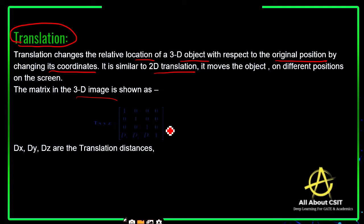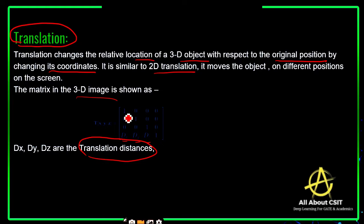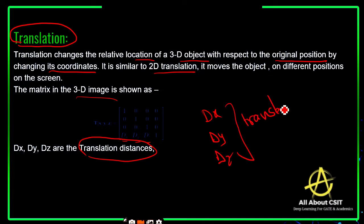The matrix used in 3D for translation contains dx, dy, and dz. These dx, dy, and dz are the translation distances — how much the object is going to be translated based on the original position. They are the translation distances representing how much the object is going to be moved, modifying its position with respect to the x axis, y axis, and z axis.